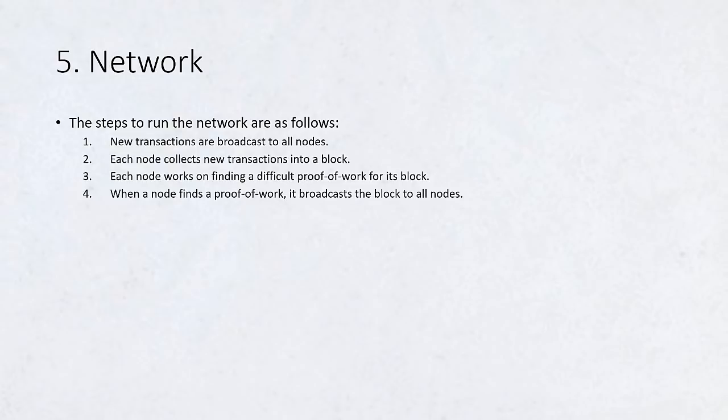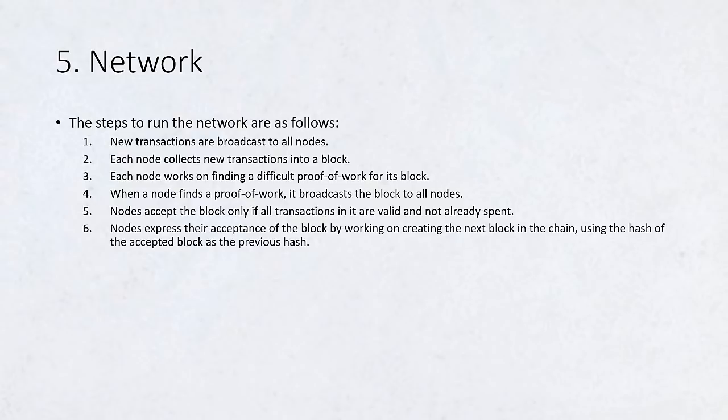4. When a node finds a proof-of-work, it broadcasts the block to all nodes. 5. Nodes accept the block only if all transactions in it are valid and not already spent. 6. Nodes express their acceptance of the block by working on creating the next block in the chain, using the hash of the accepted block as the previous hash.